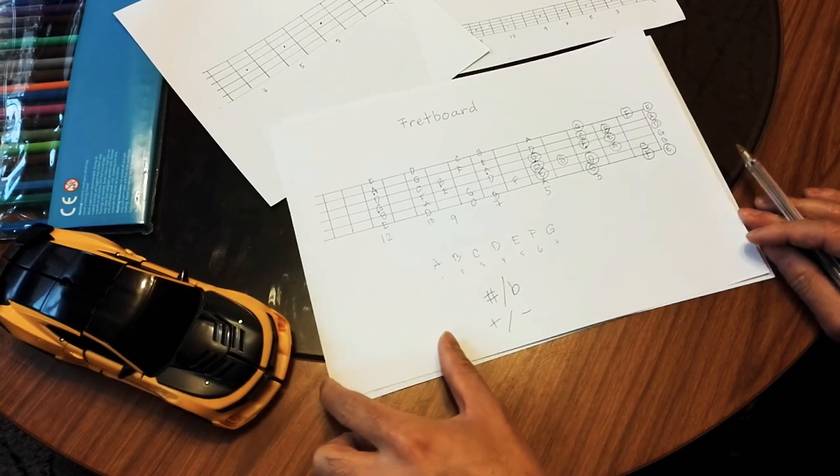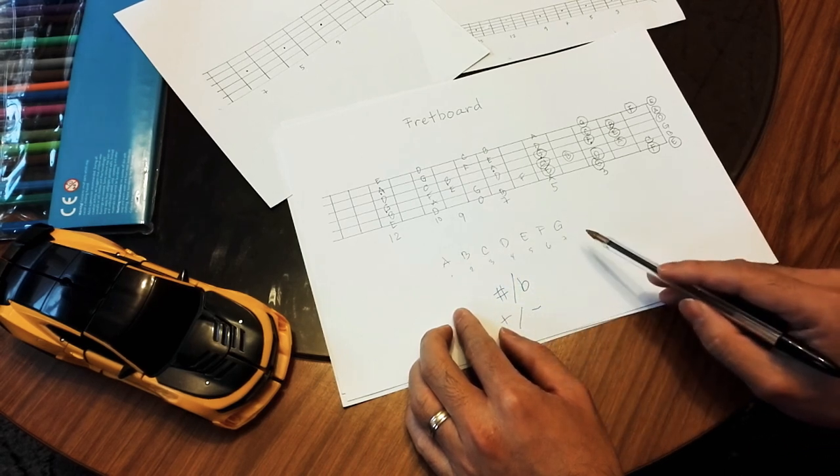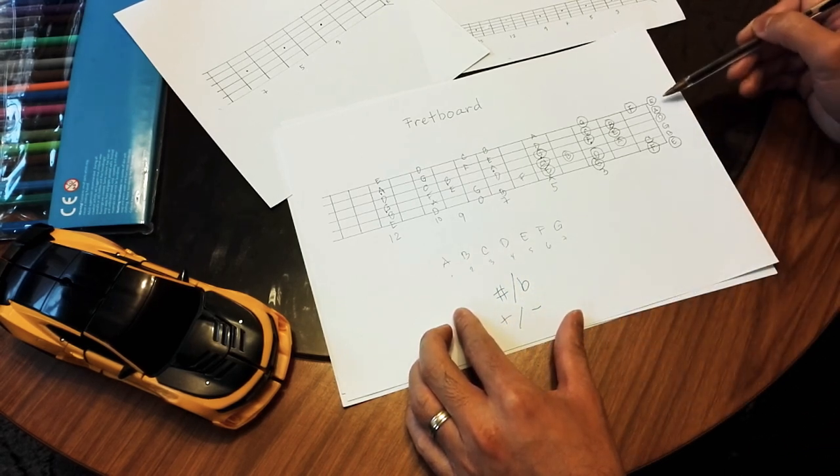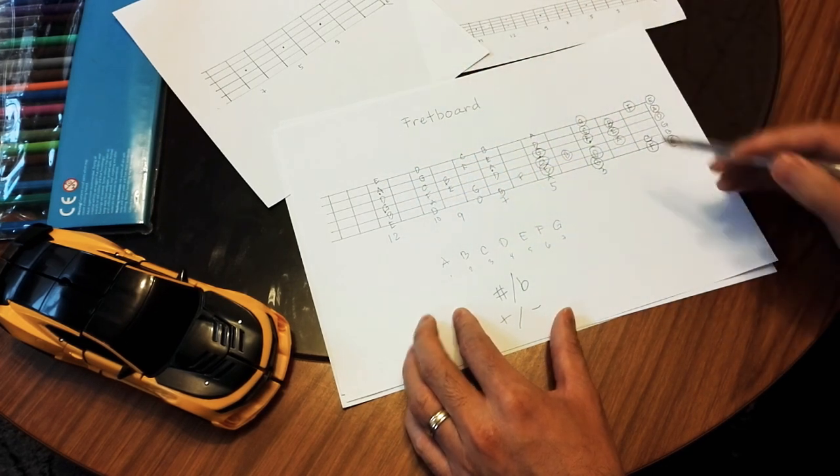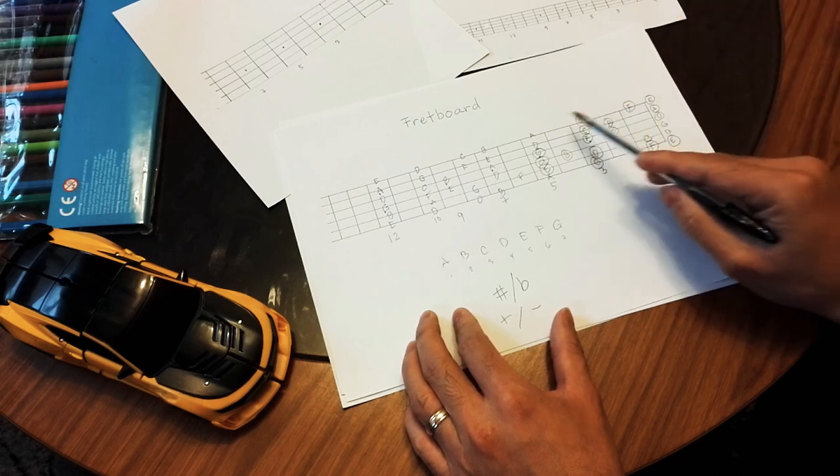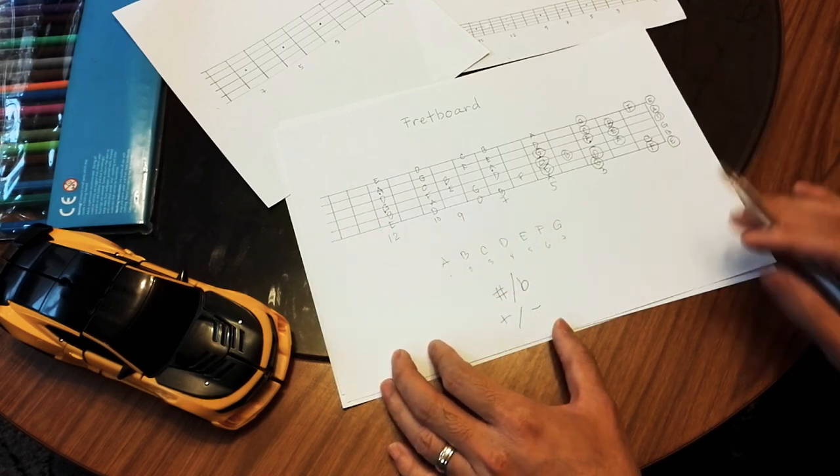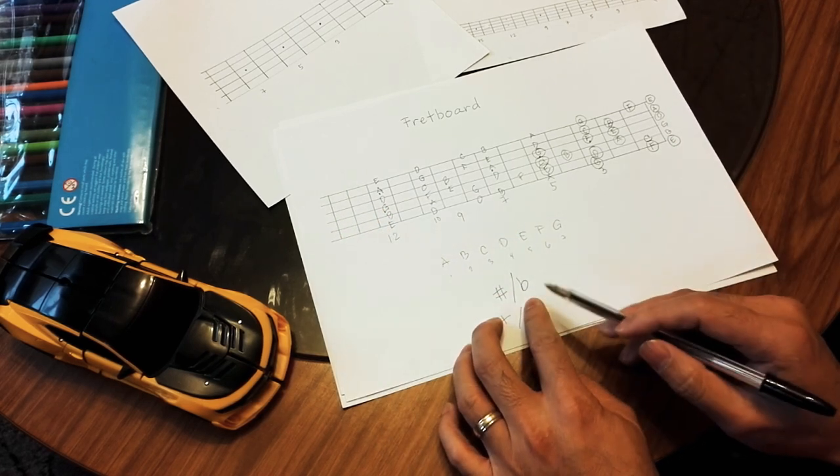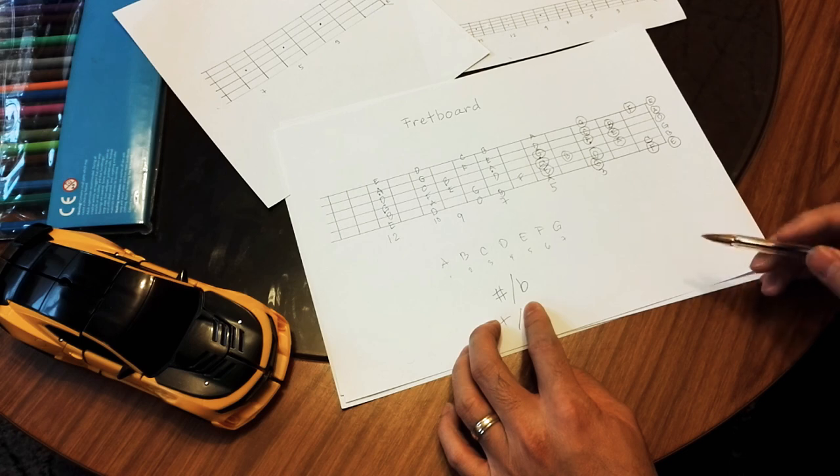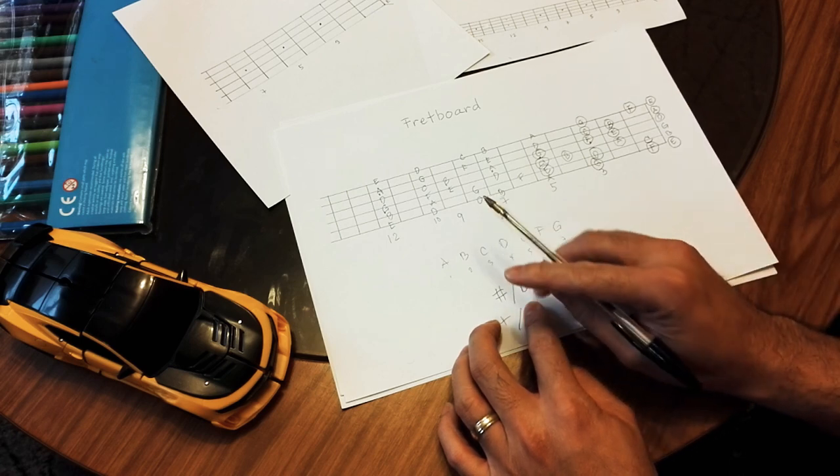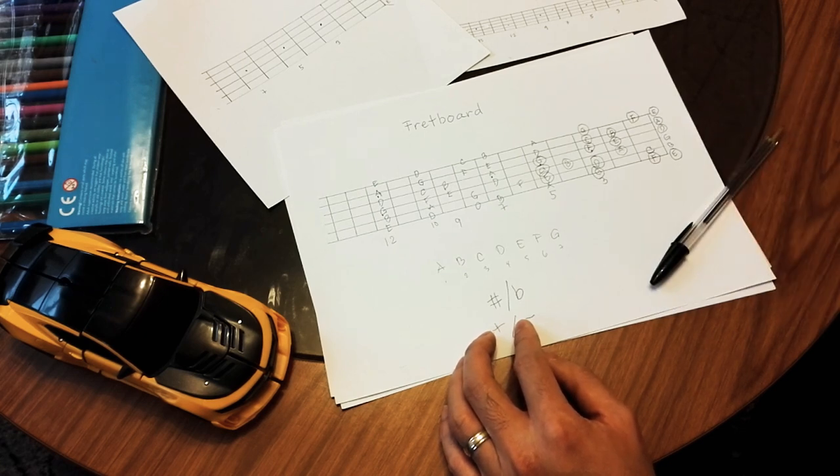All you need to remember for now with the fretboard is the basic A-B-C-D-E-F-G, and then your standard tuning which is E-A-D-G-B-E. It's going to be the same on the 12th fret, and then you got all those mapped on the fretboard. We'll learn more on the sharps and flats on our next lesson, but for now just remember all these, familiarize yourselves about this one. That's all for now, see you in the next lesson.